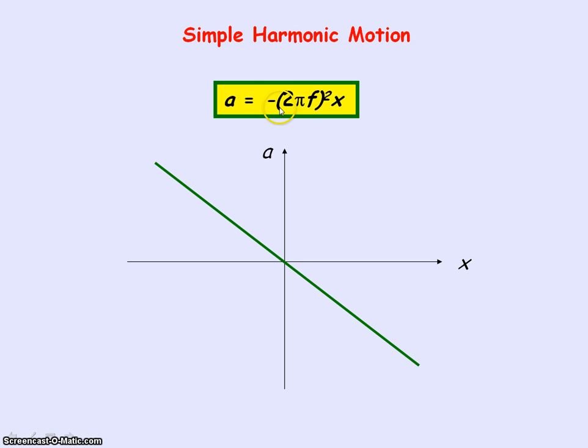So the acceleration is proportional to negative displacement. As our acceleration is along the y axis and our displacement x along the x axis, then the gradient of this line is given by minus the square of 2 pi f or minus omega squared.